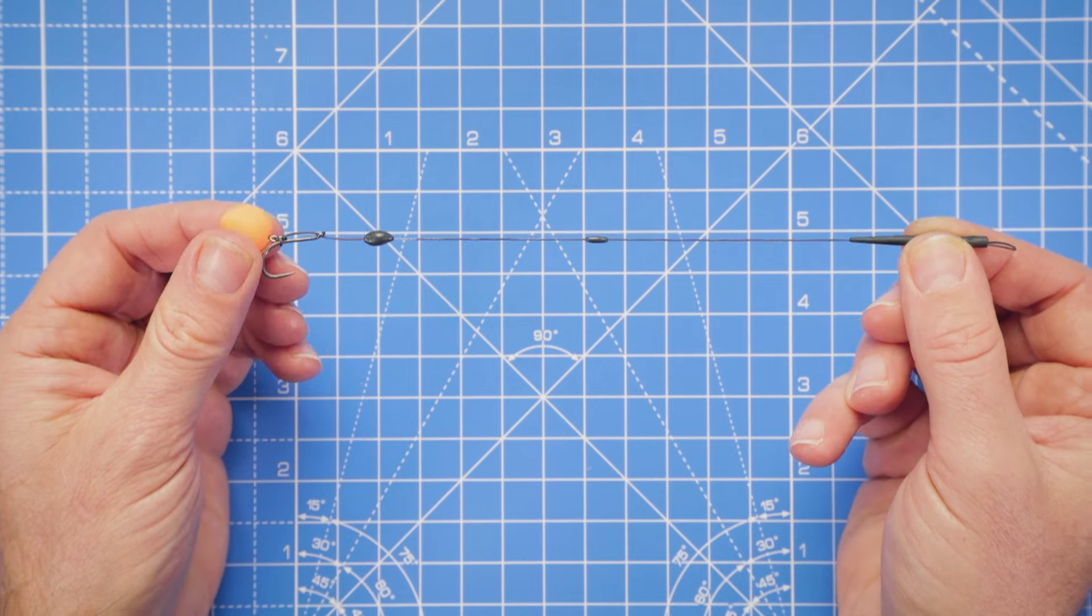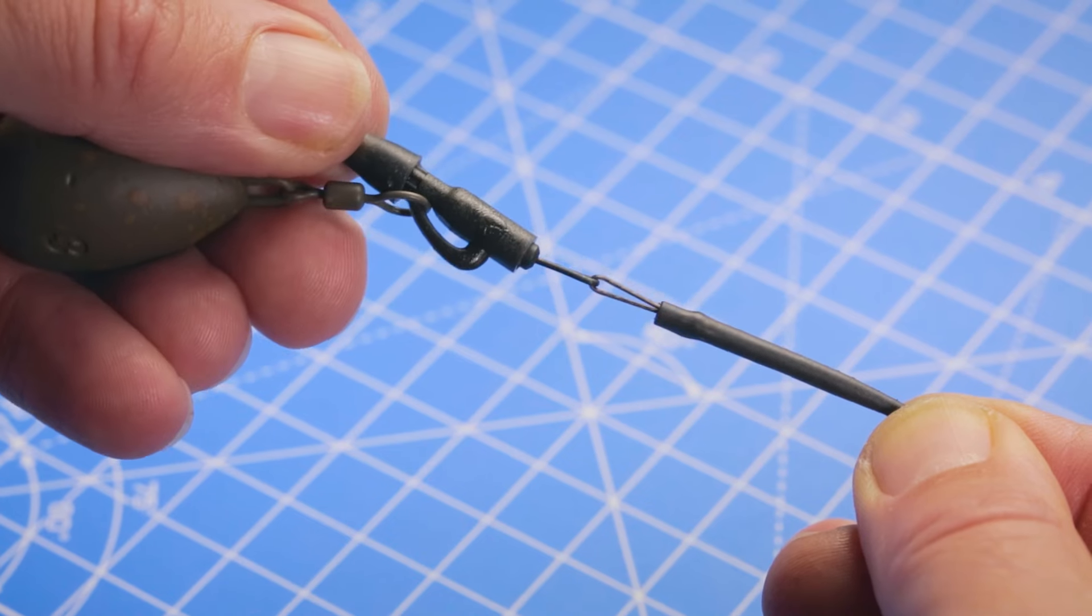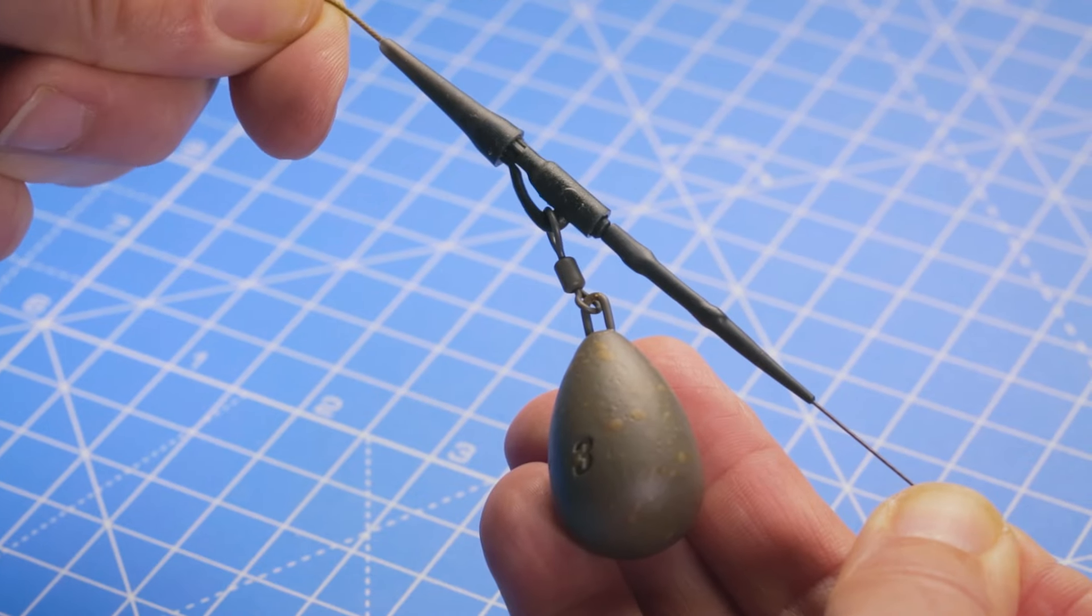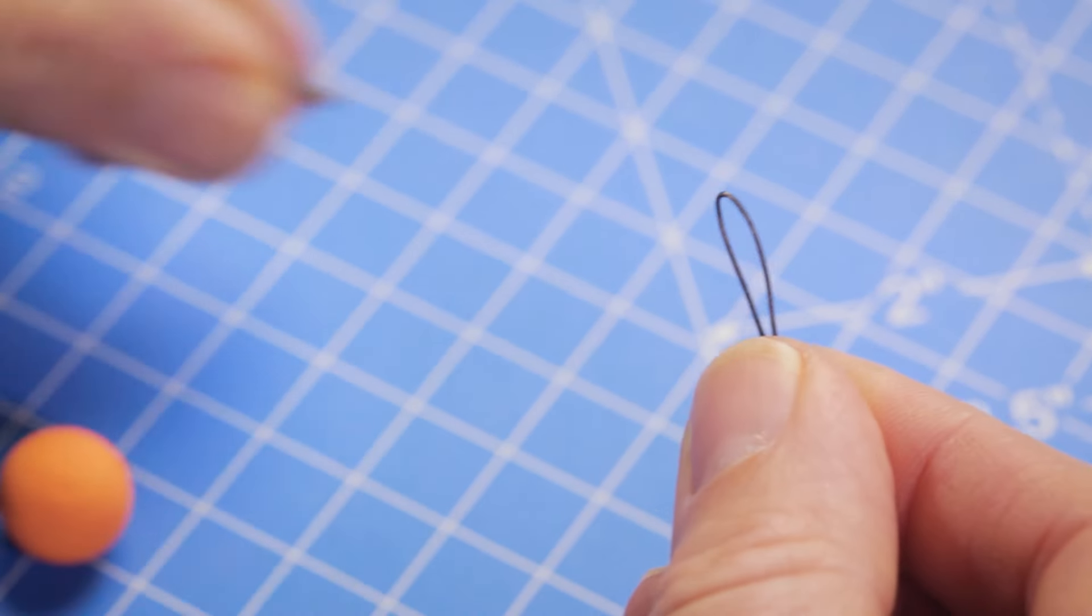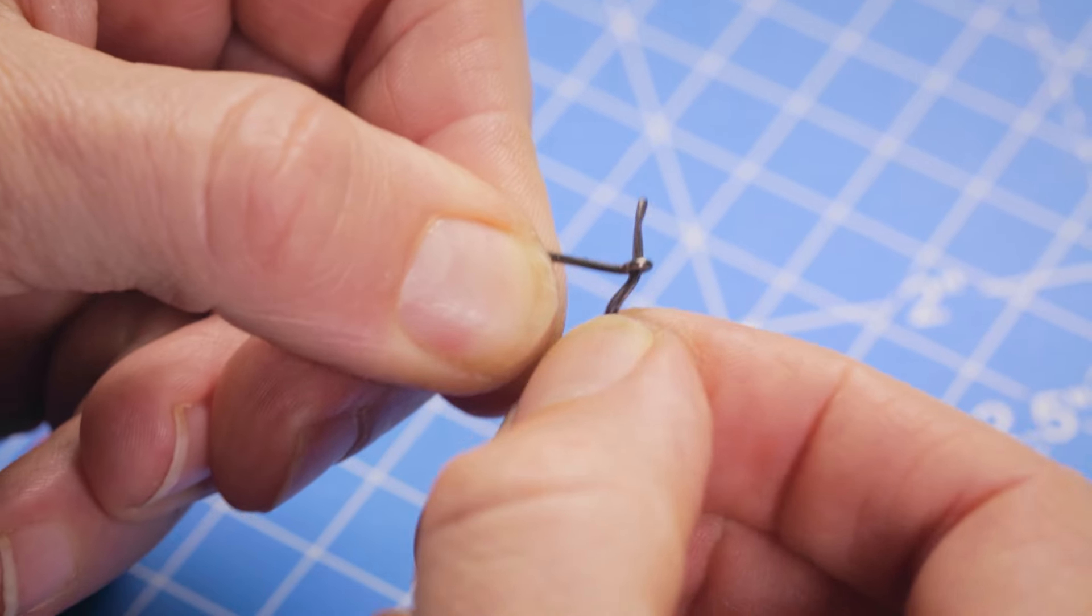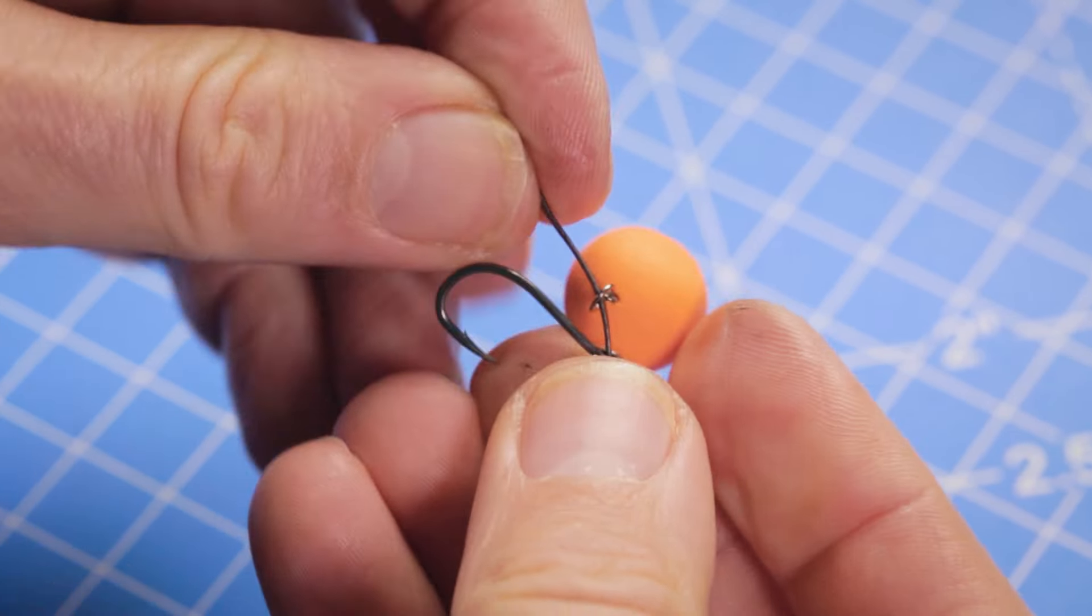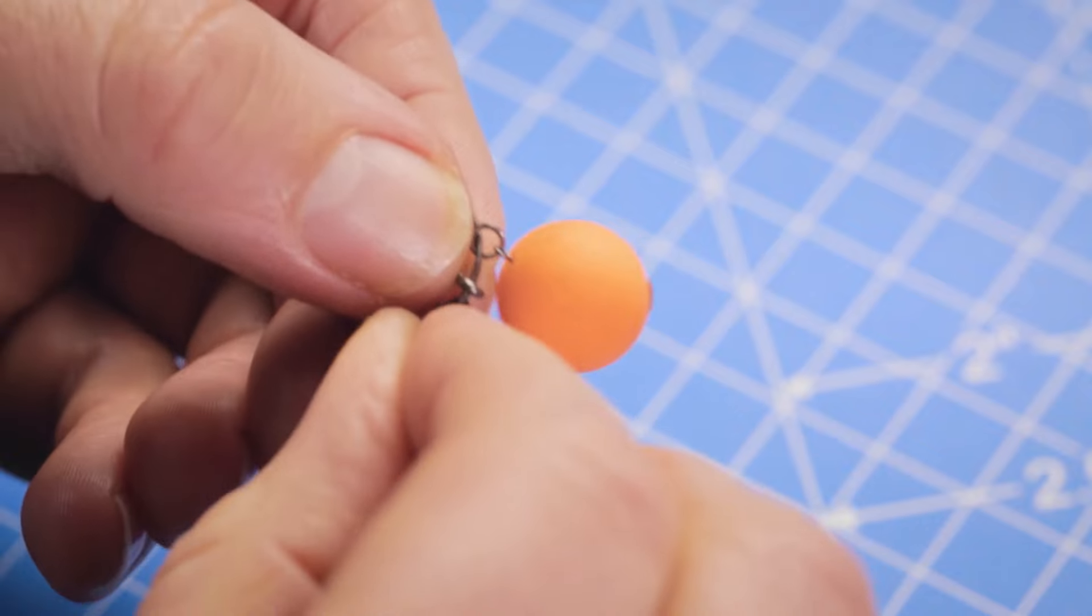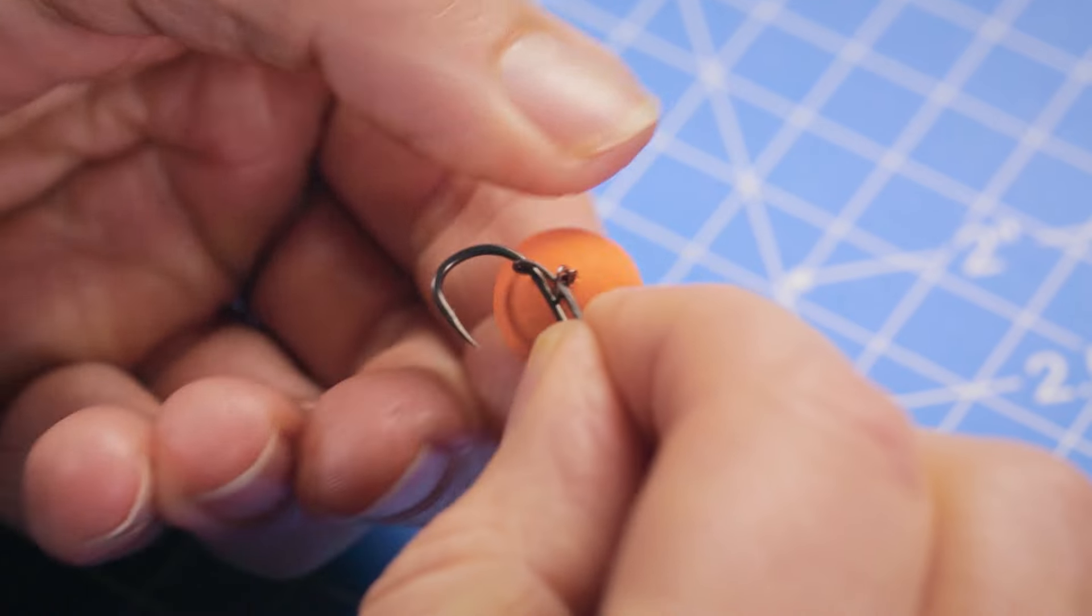And there you go, that's our multi-rig complete. All you need to do is just check that putty and balance of the rig in the edge before casting out. With that loop at one end, it's easy to attach to a quick-change swivel like this, either on a lead clip system or on a heli system. And here's one of the biggest benefits of the multi-rig, and that's the fact that you can change your hook without having to tie a new fresh rig. So should you blunt the hook or your hook is dulled after landing a fish, you can just simply remove the hook off the loop, add a fresh hook bait, a fresh hook, pass the hook back through that loop, recreate and shape your D section.